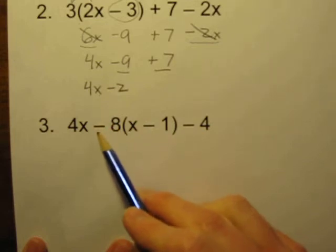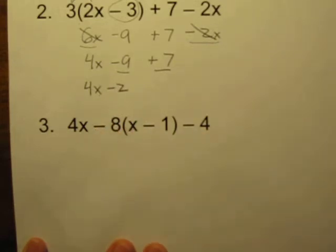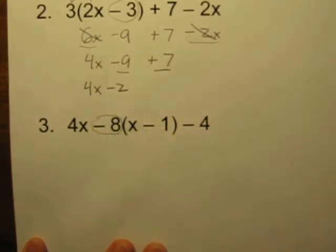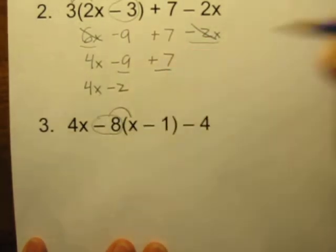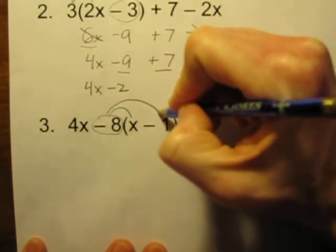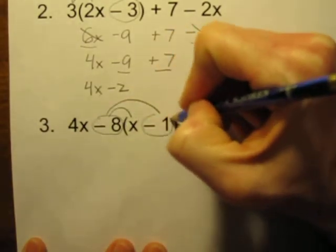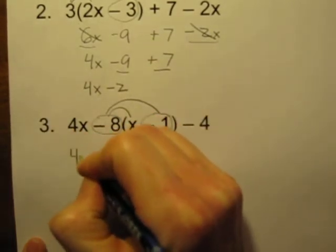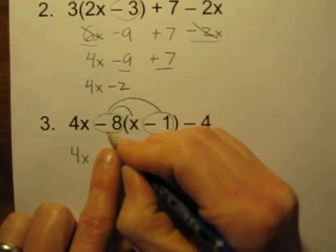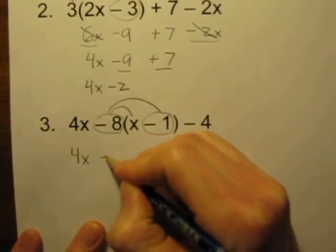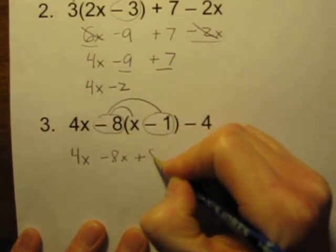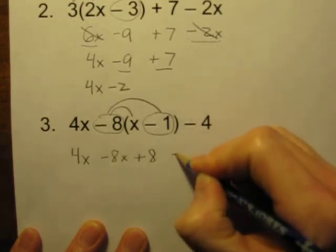What a lot of people want to do is they want to forget about this negative sign. But when we multiply here, this really means negative 8 times everything inside the parentheses. So don't leave off that negative sign. This is negative 8 times x, negative 8 times negative 1. Let's rewrite the 4x. Now negative 8 times x is negative 8x. Negative 8 times negative 1 is a positive 8. Let's rewrite that minus 4 as well.